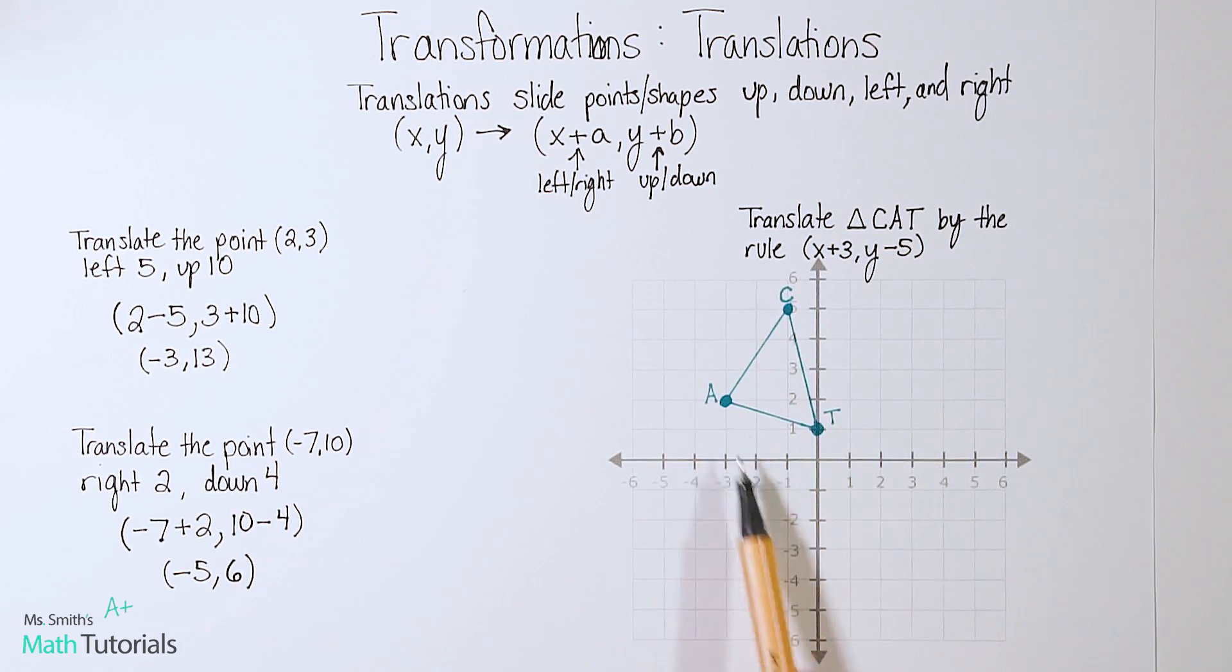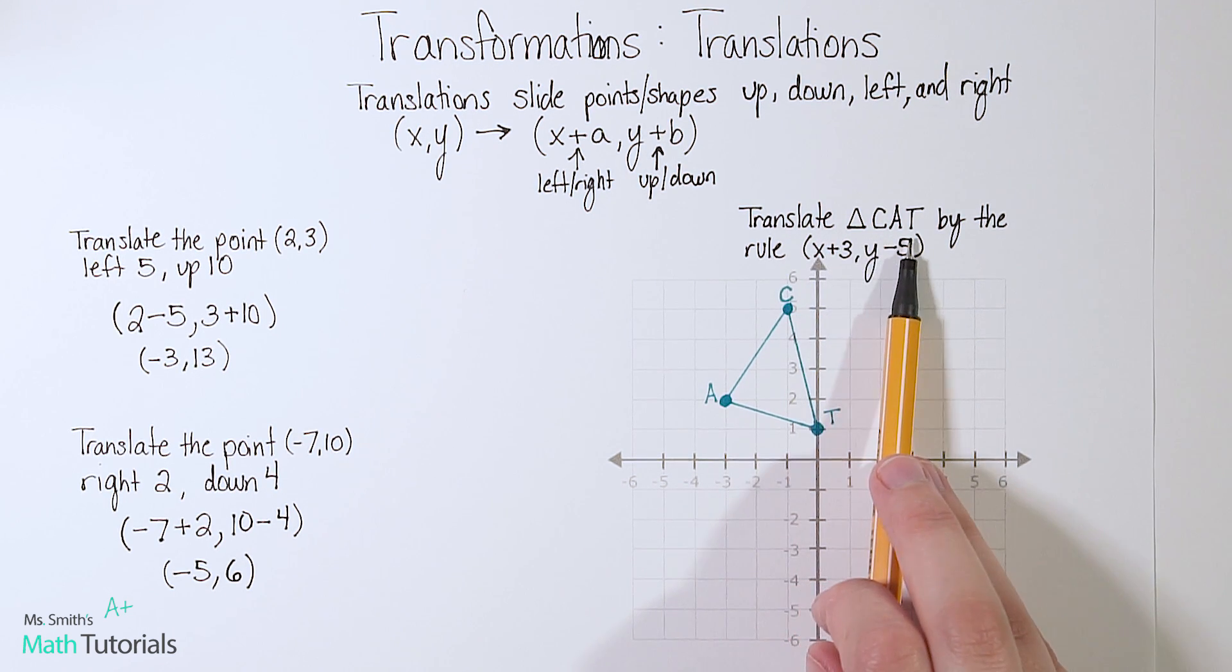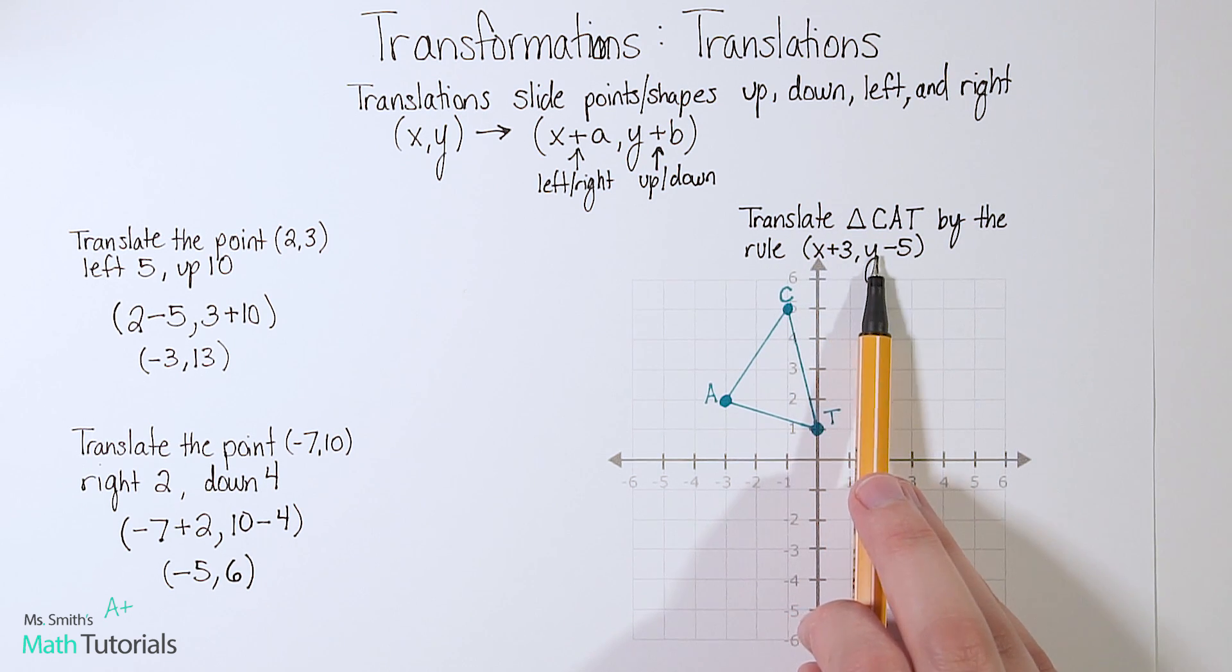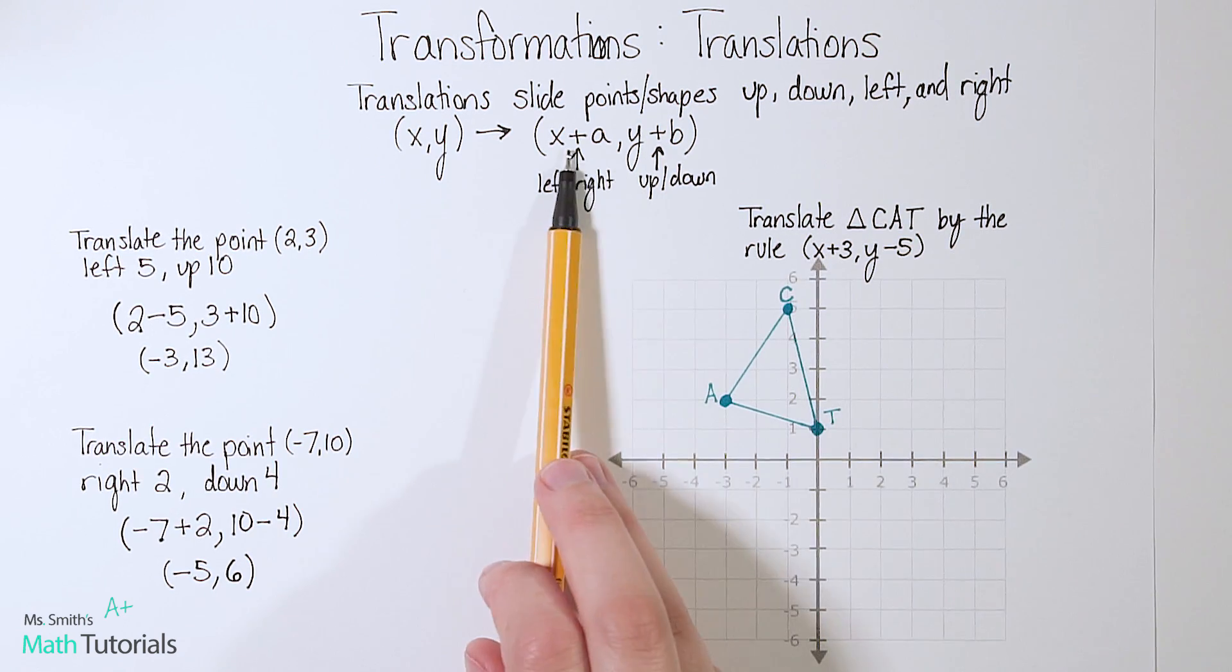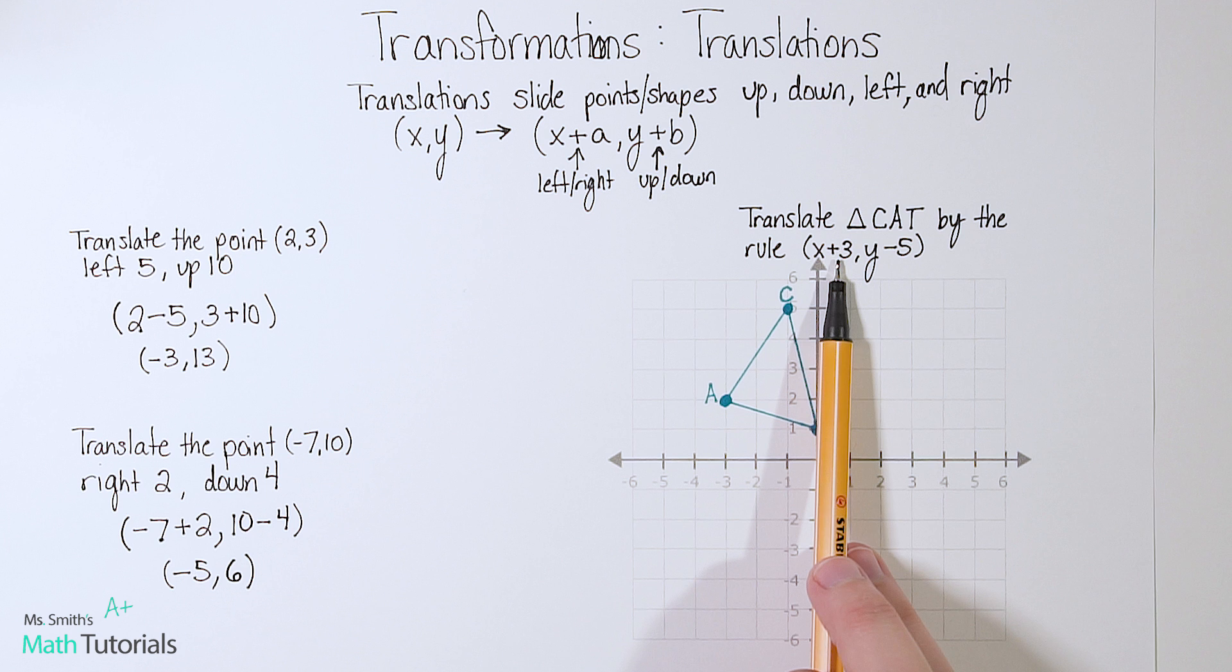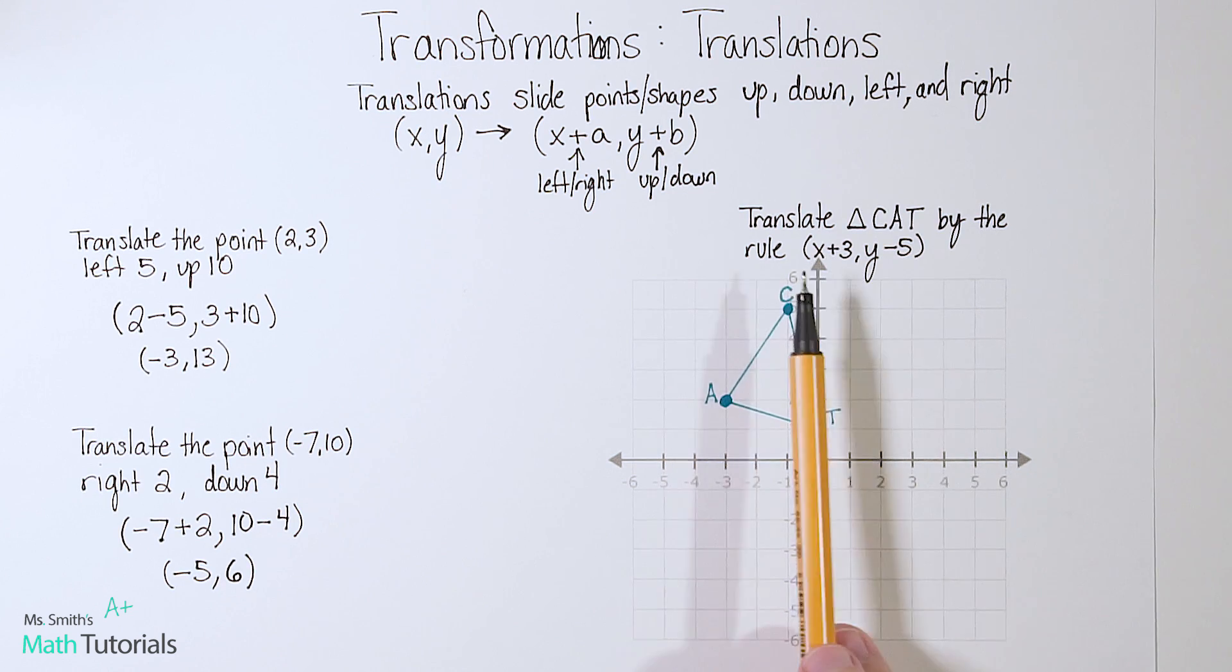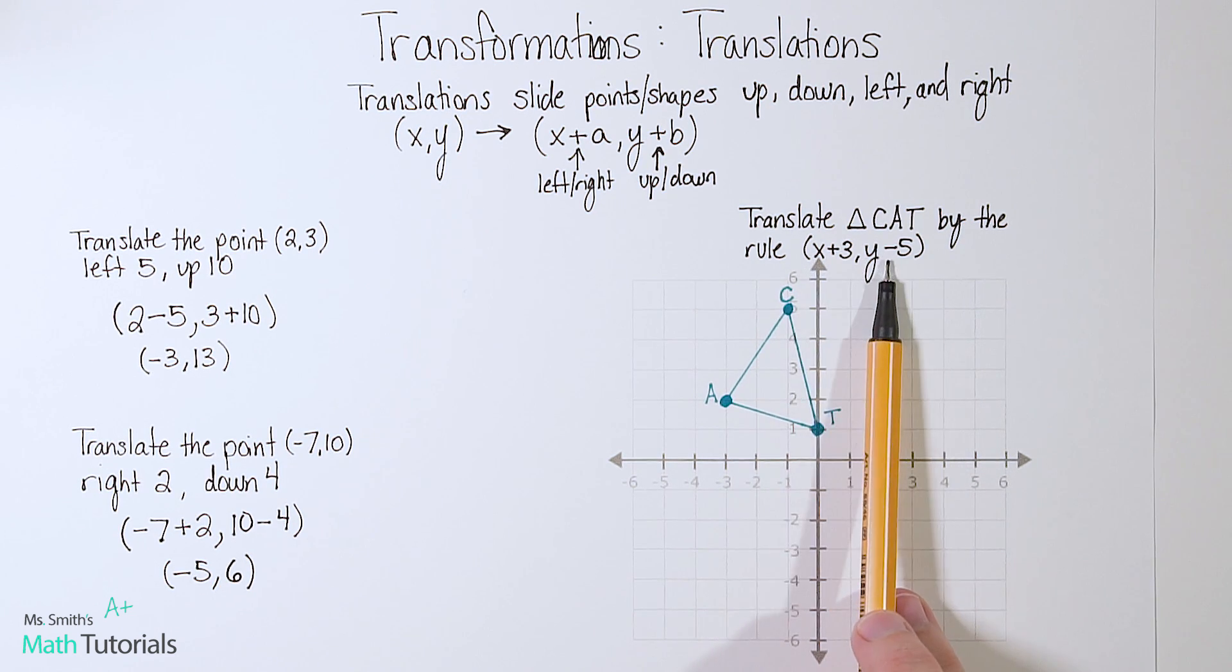Now over here, we're actually going to see this on a graph, how it will work based on a given triangle. So this says translate triangle CAT by the rule x plus 3, y minus 5. So this time, we're actually seeing the rule in this rule form. We're going to be adding 3 to the x value, and we're going to be subtracting 5 from the y value. So in reality, this is going to translate to, we're going to move right 3 and down 5.